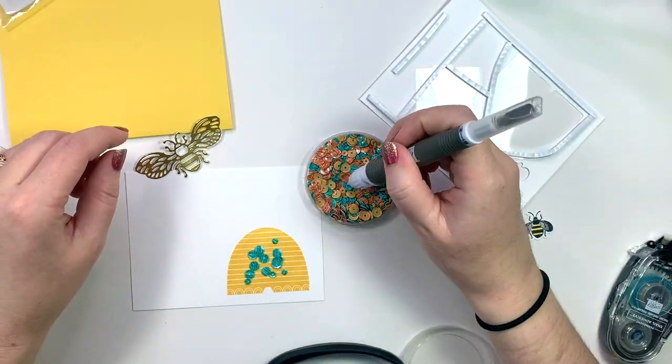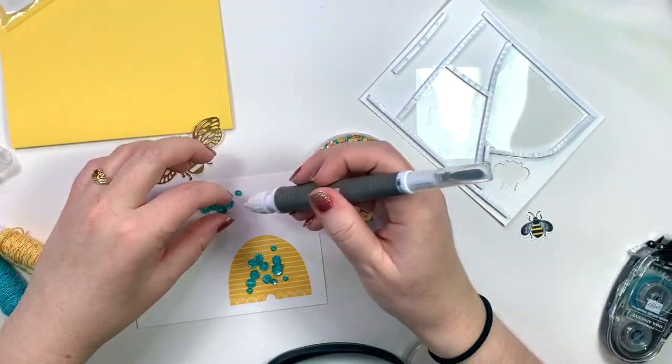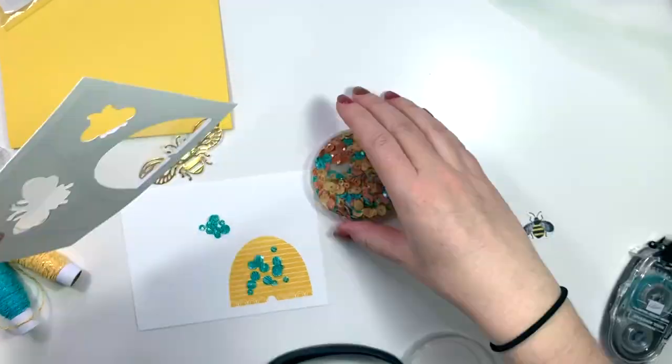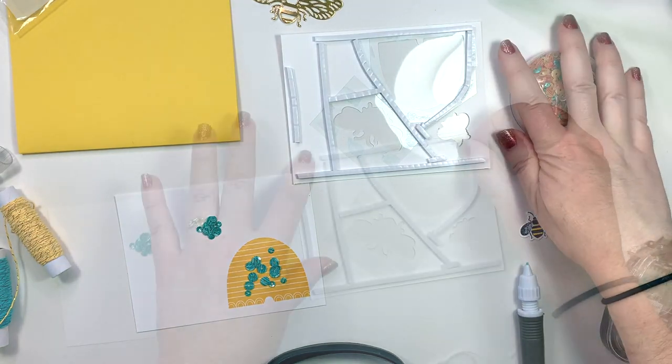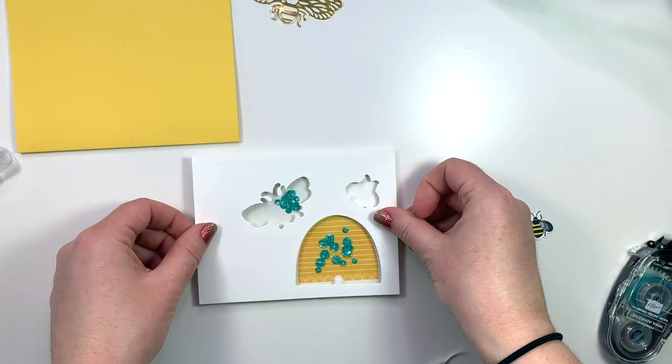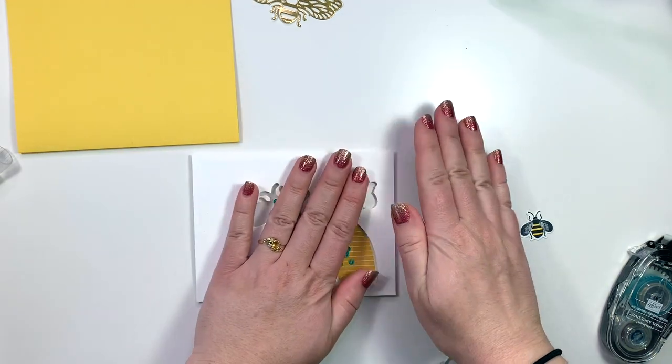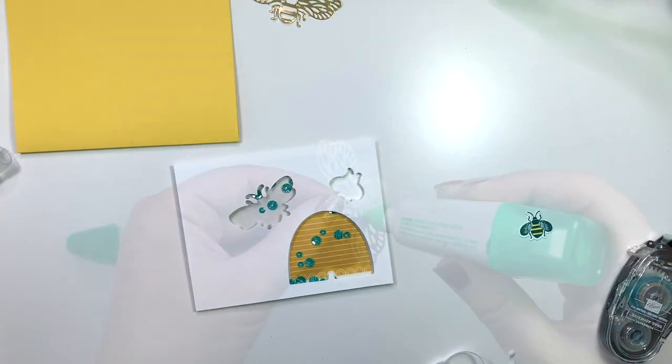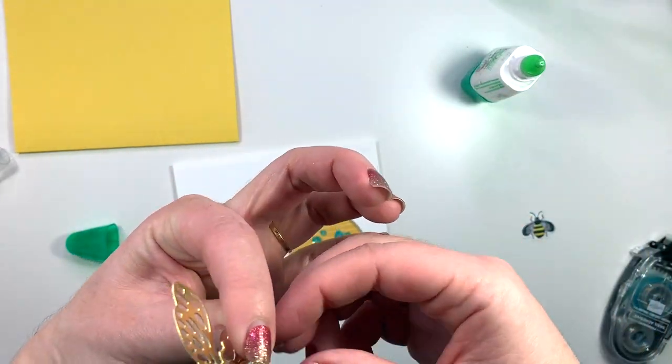I'm using some of these celebration sequins. You can find these linked in the description box below and I'm just going to put them onto the card mat that I have stamped the hive on, and then once I take off the backing from that foam pieces on the back I can glue that down to the front and I have my shaker.